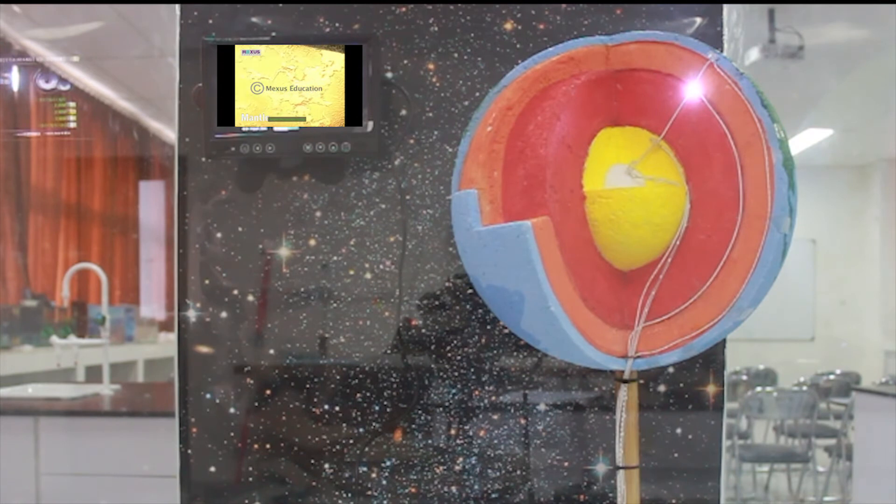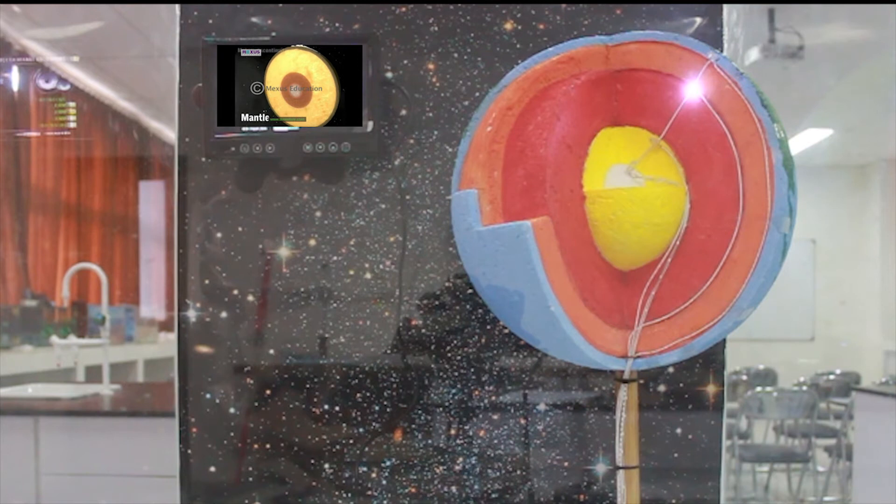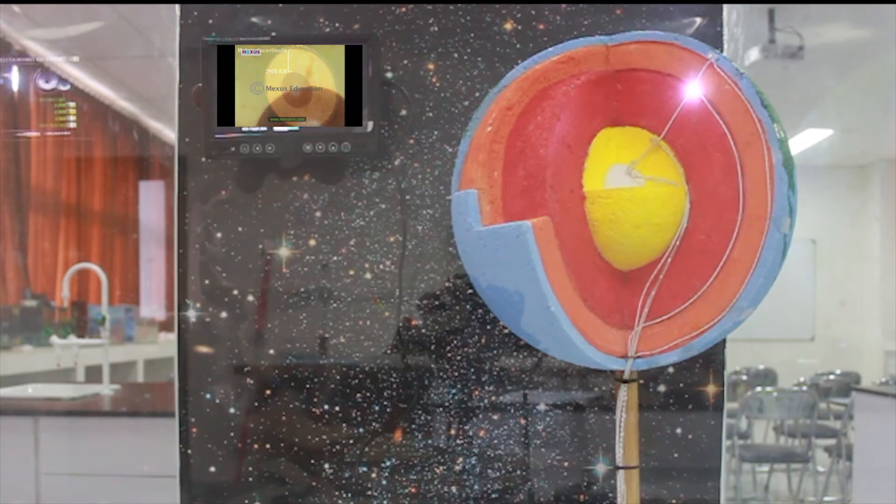The mantle forms the main mass of the Earth. It is the layer just under the crust. It extends from the mantle's discontinuity to the depth of about 2,900 kilometers. The mantle is a partly molten layer and can have temperatures reaching 4,000 degrees Celsius.